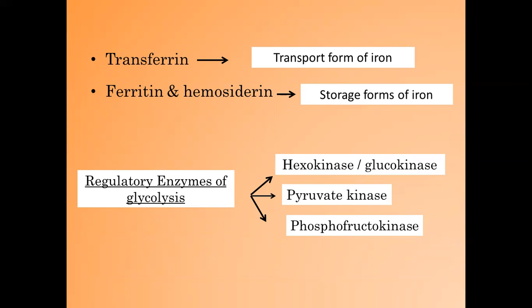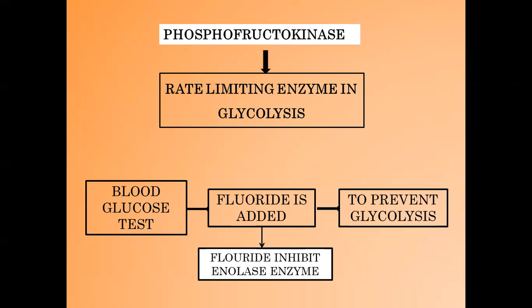Now let's discuss about glycolysis. The regulatory enzymes of glycolysis are hexokinase or glucokinase, pyruvate kinase, and phosphofructokinase. Phosphofructokinase is also the rate limiting enzyme in glycolysis. For the blood glucose test, fluoride is added to prevent glycolysis because fluoride inhibits the enolase enzyme.